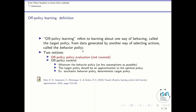There are two off-policy notions. One is called off-policy policy evaluation, which I will not cover here. What is of interest to us is off-policy control. An algorithm is off-policy if, whatever the behavior policy — making as few assumptions as possible — the target policy can become optimal. For instance, I could have a stochastic behavior policy and a deterministic target policy.